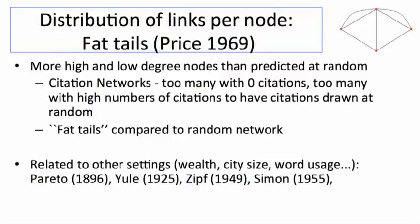Just to remind you, Price's finding in citation networks was one of the early sets of evidence on this, where citation networks had too many that had no citations, too many with high numbers of citations for these things to be coming uniformly at random. It exists in a lot of other settings: wealth, city size, word usage. A lot of things have these kinds of fat tails.